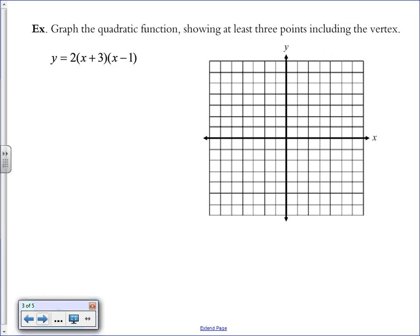If we're asked to graph the quadratic function, this time it wants us to show at least three points, including the vertex. We haven't yet figured out how to get the vertex from this form. You could always distribute and turn it into standard form and use the vertex formula. I think that's the long way to do it.